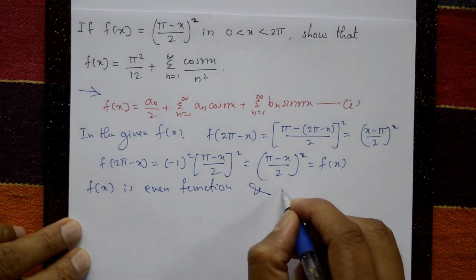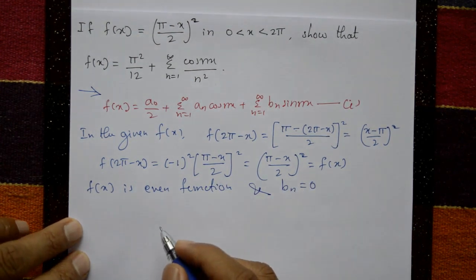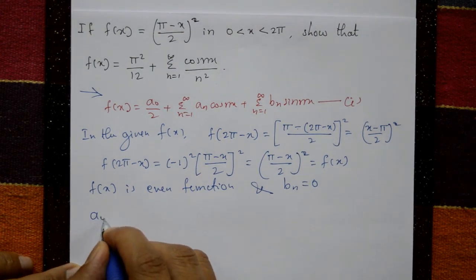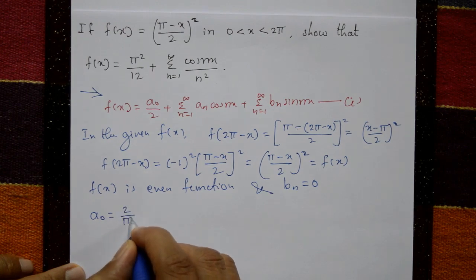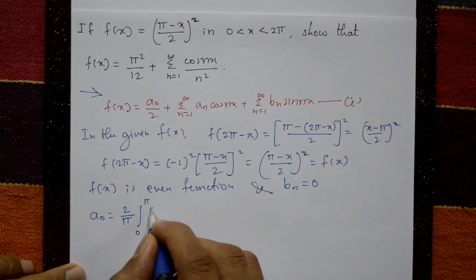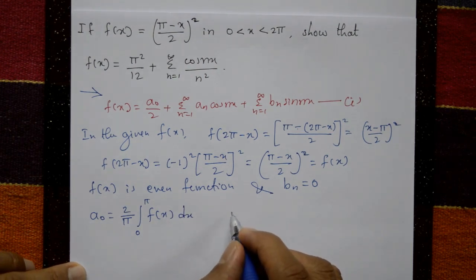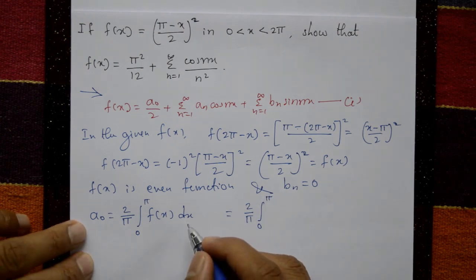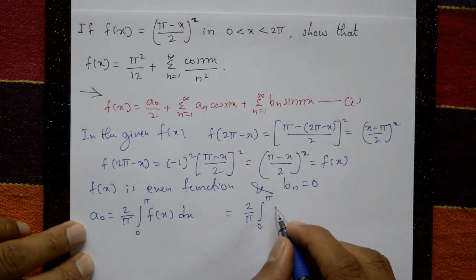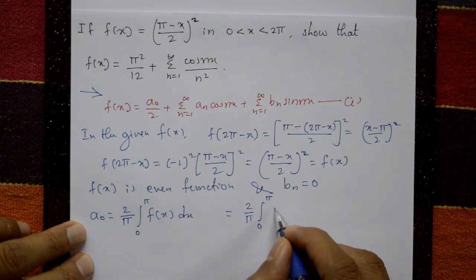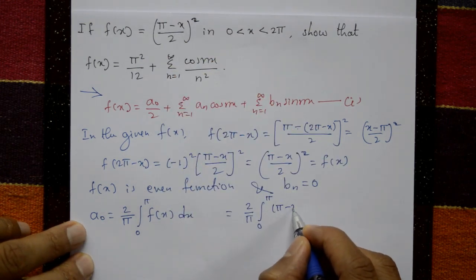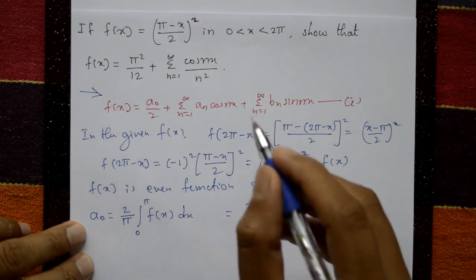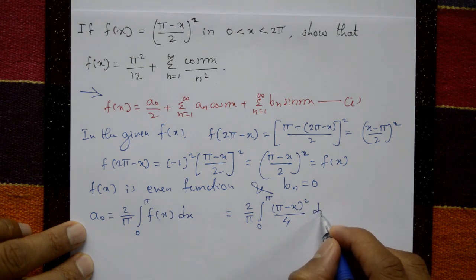Since f(x) is an even function, the bₙ value is 0. We only need to find a₀ and aₙ. For a₀: a₀ equals 2 by π, integration from 0 to π of f(x) dx. Substituting f(x) as (π minus x) whole square divided by 4, and taking 1 by 4 outside, the 2s cancel leaving 1 by 2π.